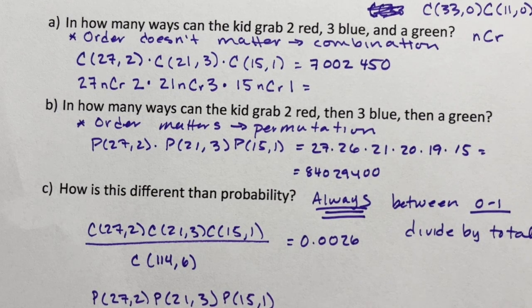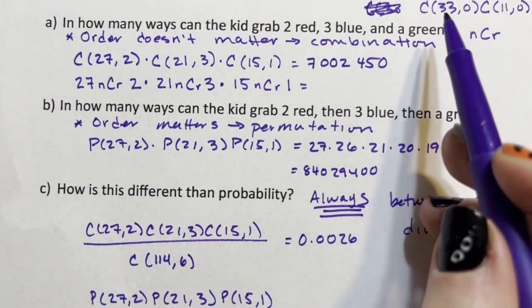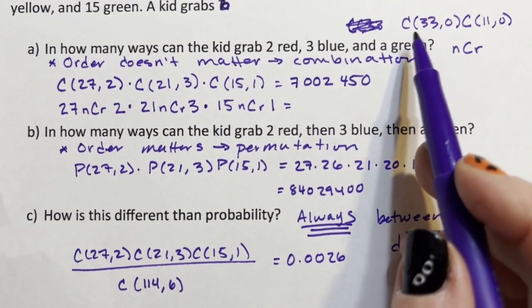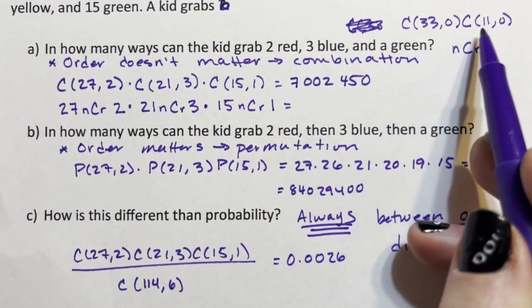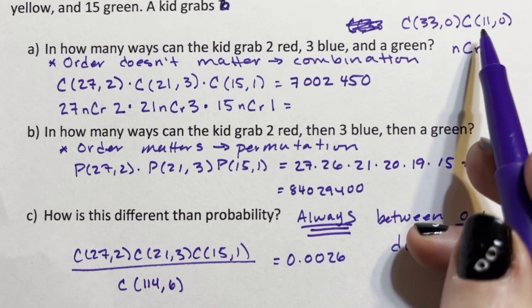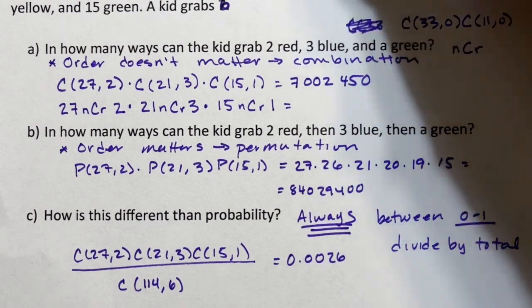For permutation, P(27,2) times P(21,3) times P(15,1) over P(114,6). This is going to be ridiculously small. The answer is 0.000723444.